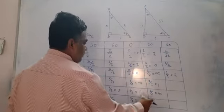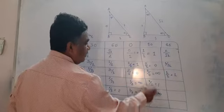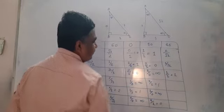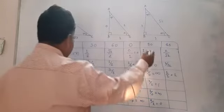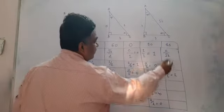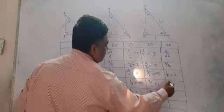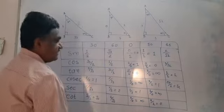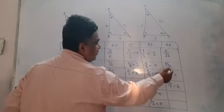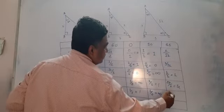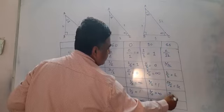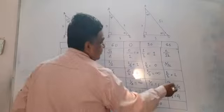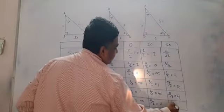For cot 90, it is 0 upon 1, which becomes 0. For cosec 45, it is root 2 upon 1, which becomes root 2. Sec 45 also becomes root 2 upon 1, so root 2. And cot 45 gives 1 upon 1, which is 1.